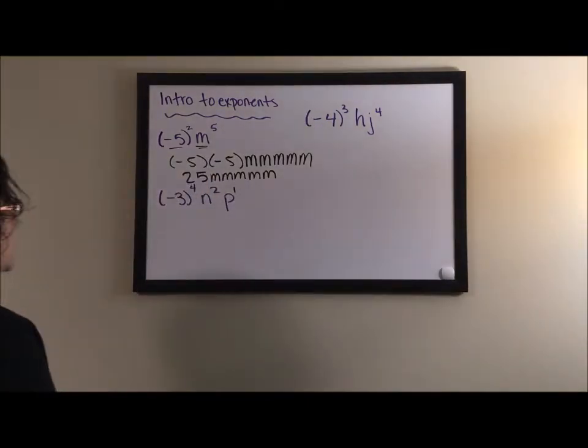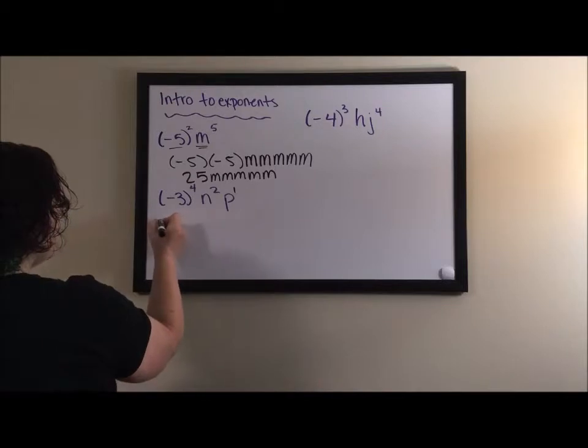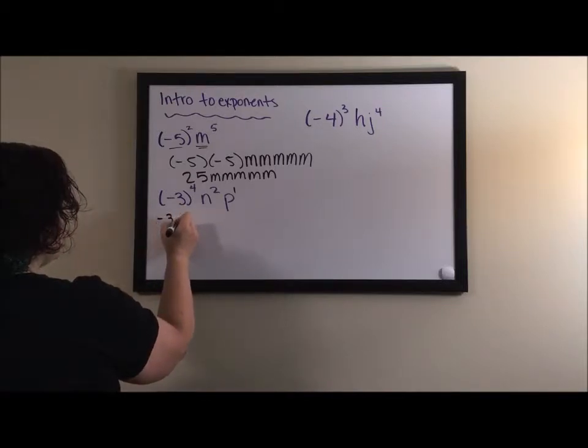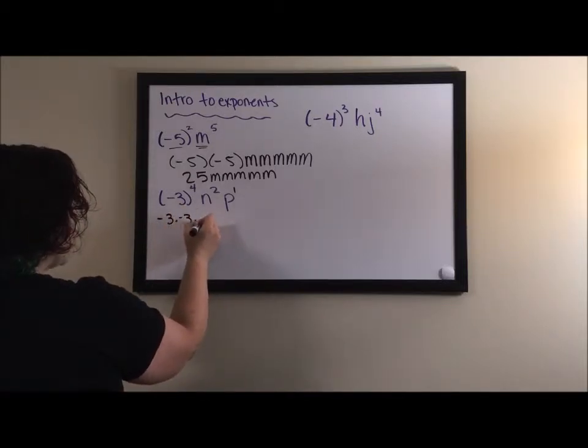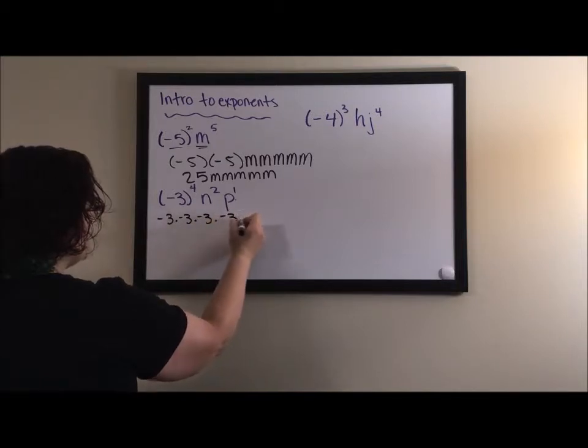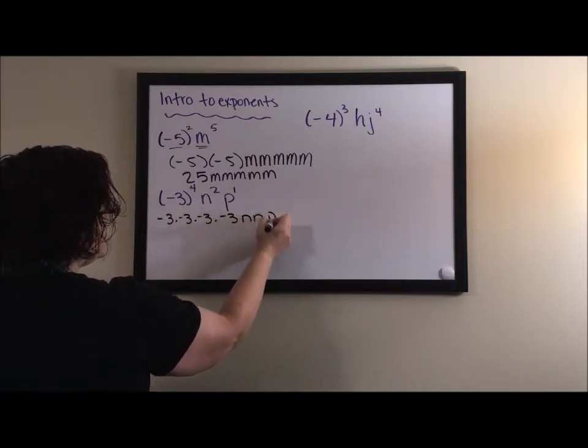Alright, for the second example we have four of the negative threes. This time I'm going to write it without parentheses, but I'm going to make sure that it's obvious that it's times a negative three times a negative three. Then there are two n's and one p.